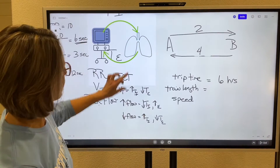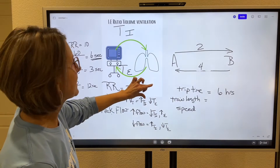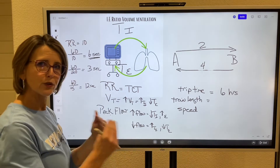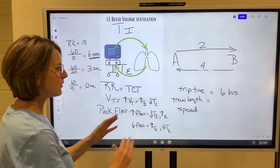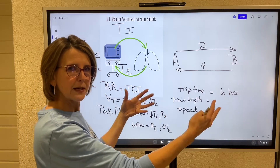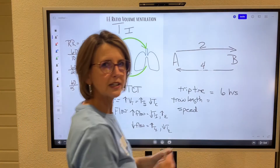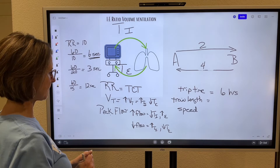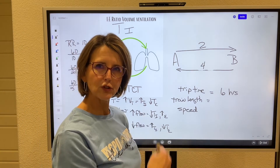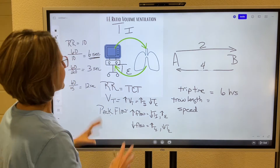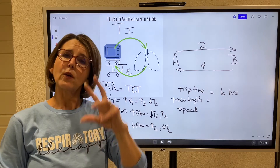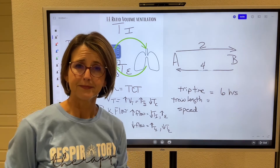When you're thinking about IE ratio: the respiratory rate establishes the trip time; the tidal volume is the length of your train — when it's bigger, it takes longer to get to the destination; and flow is how fast you drive — if you drive faster, you get there sooner. We're going to take this analogy into the next video and talk about the ventilator. See you next time.